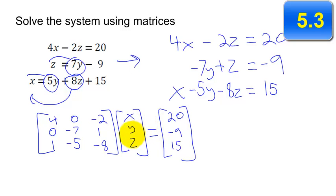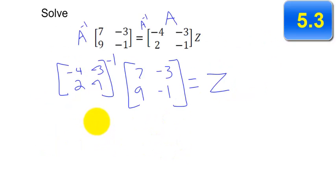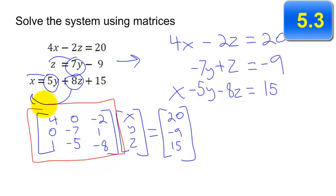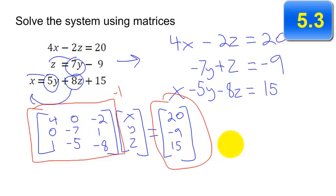The last step is just like the previous matrix equation problem — multiply both sides by the inverse of the coefficient matrix. So X, Y, Z equals the inverse of the coefficient matrix times the constant matrix. Whatever that gives you is your X, Y, and Z values.